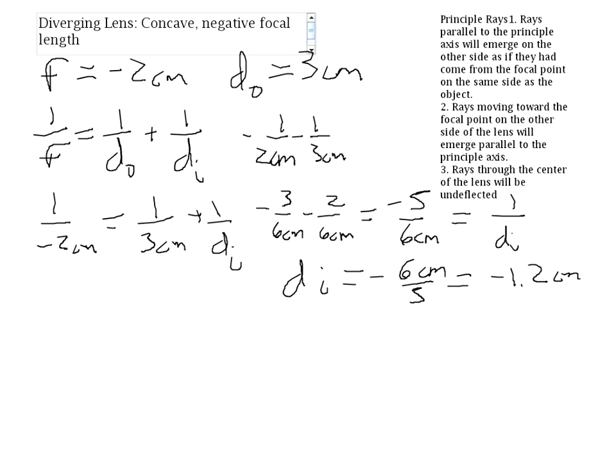The fact that we got a negative answer means that our image is going to be virtual. And that's always true — if you have a diverging lens and it's the only lens in the problem, you will always have a virtual image. A single diverging lens is not capable of producing a real image. It can produce a real image in some cases if you pair it with a second lens, but with a single diverging lens, you will always have a virtual image.